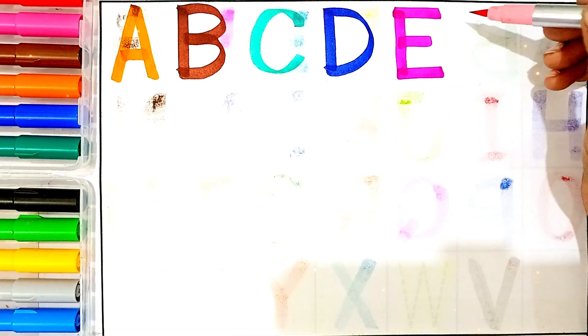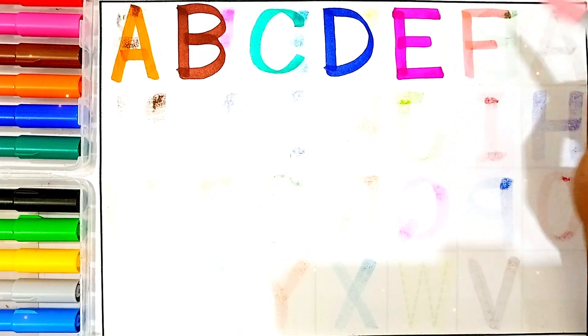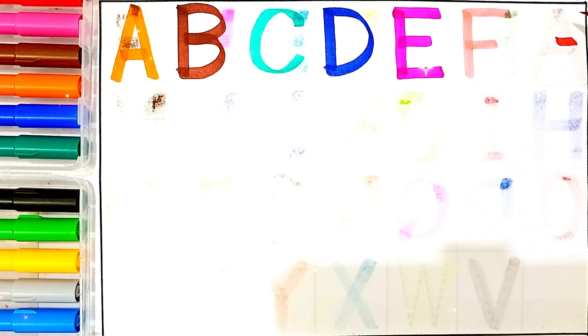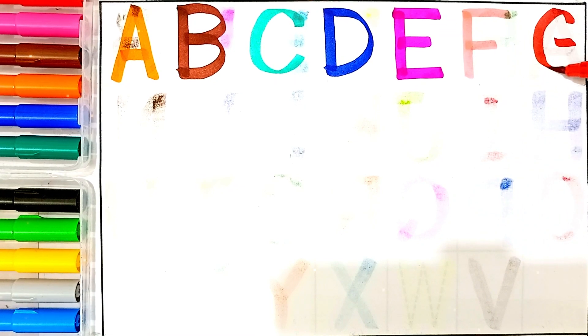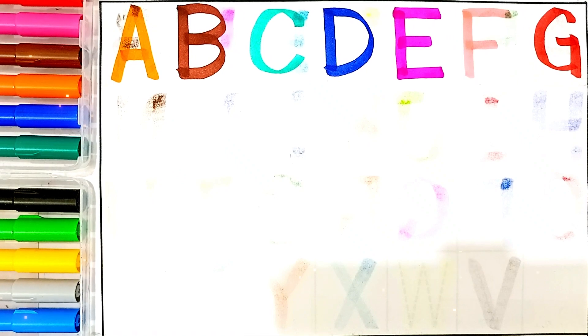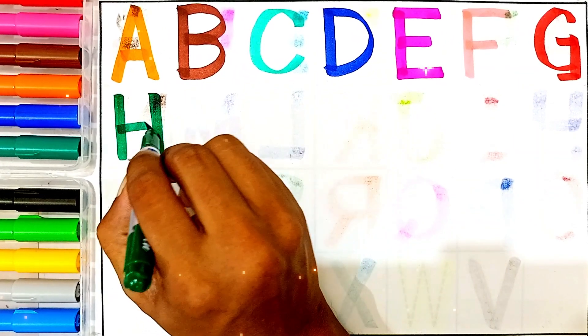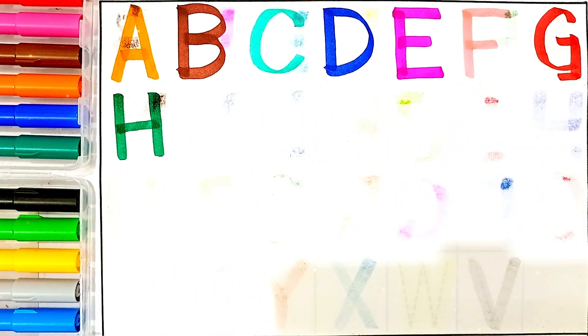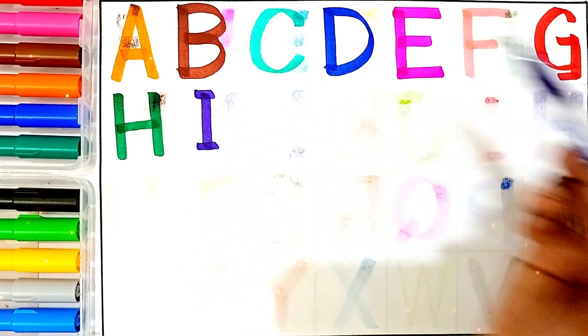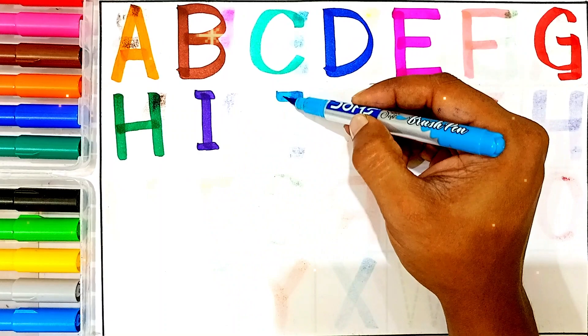F, light pink color, F for fish. G, red color, G for grass. H, green color, H for hen. I, purple color, I for ice cream. J, sky blue color, J for jackal.